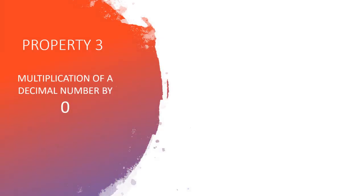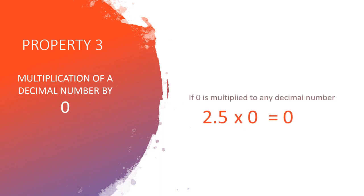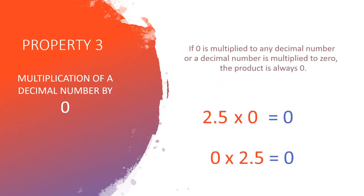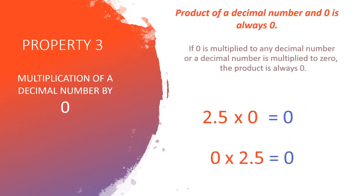Third property: Multiplication of a decimal number by 0. For example, 2.5 x 0 is equal to 0, or 0 x 2.5 is equal to 0. So what you observe? Product of a decimal number and 0 is always 0.